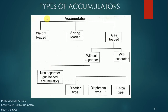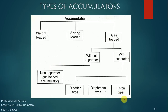Accumulators are divided into three types: weight (dead weight) loaded, spring loaded, and gas loaded. In gas-loaded accumulators, there are two subtypes — without separator and with separator. In the without-separator type, the gas can mix with the working oil, whereas in the with-separator type the gas does not mix with the pressurized oil. The without-separator type is called a non-separator gas-charged accumulator. With-separator types are further divided into bladder type, diaphragm type, and piston type.